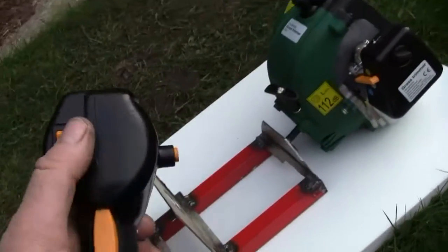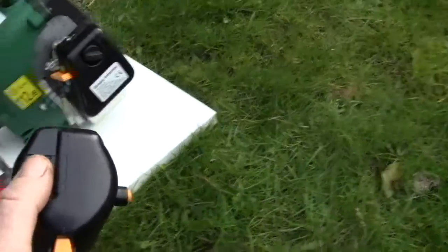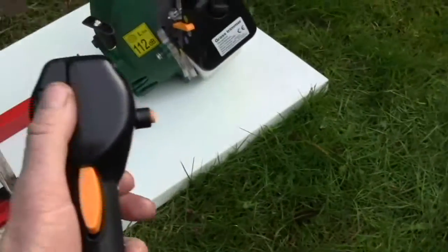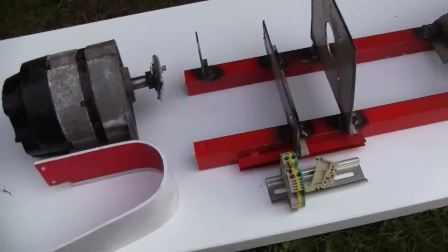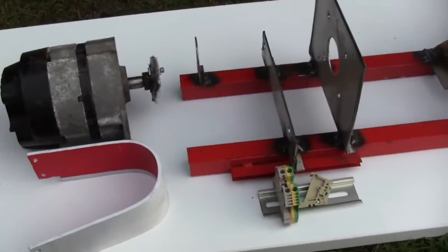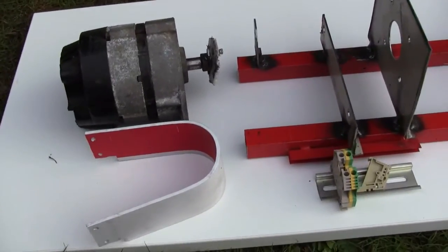And the start-stop switch was the original one on the grass trimmer. I think I'll do away with it because what I need to do is switch the field current on and off on the alternator initially. I need to switch it on to start it.